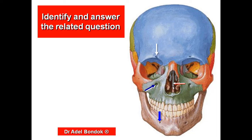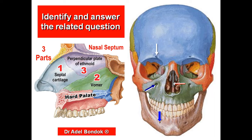This is the nasal septum. The nasal septum is formed of three parts: the anterior part is the septal cartilage, the posterior part is the vomer, and the upper part is the perpendicular plate of the ethmoid bone.